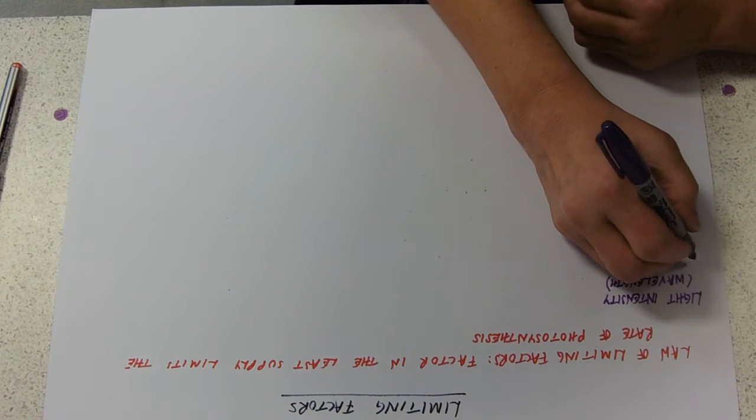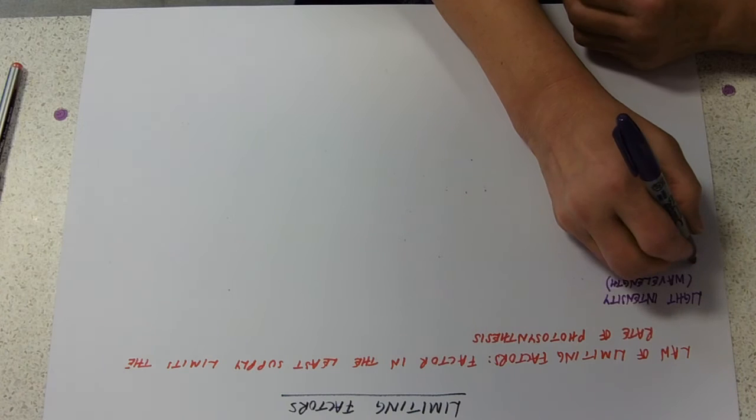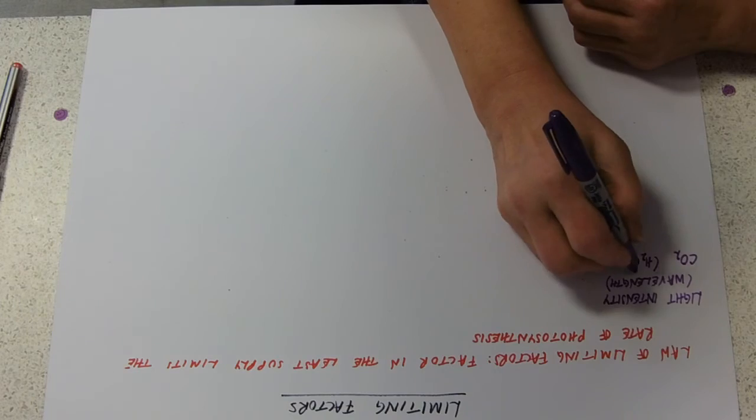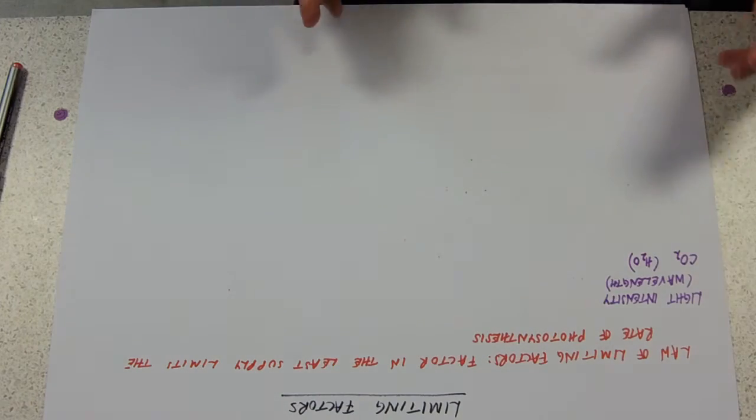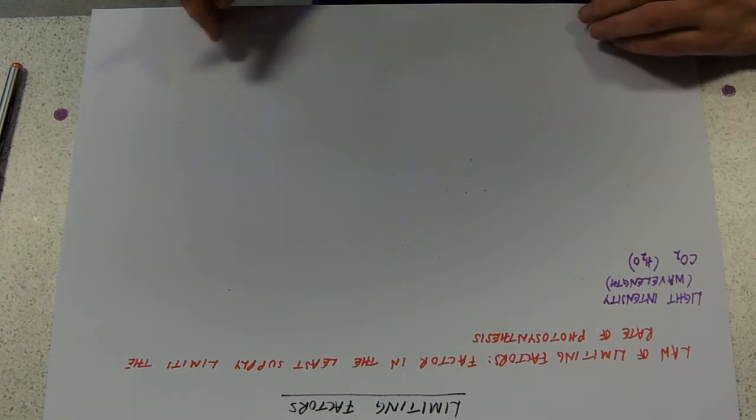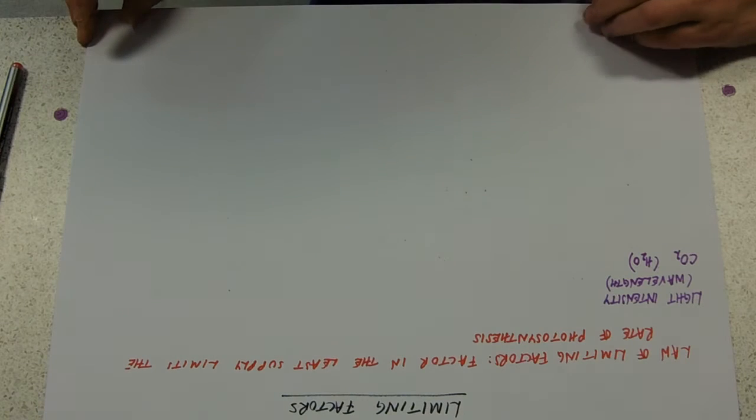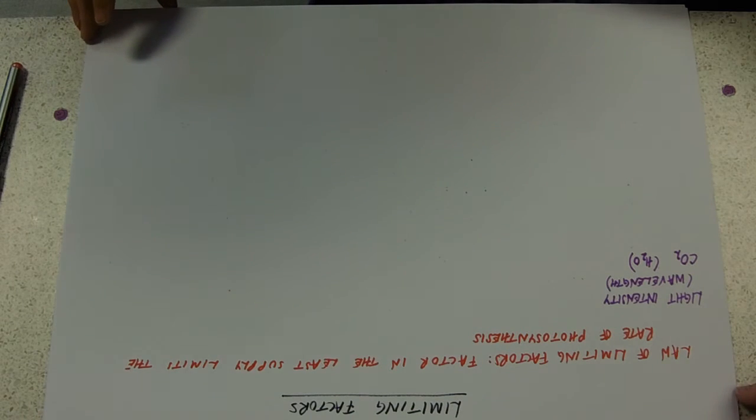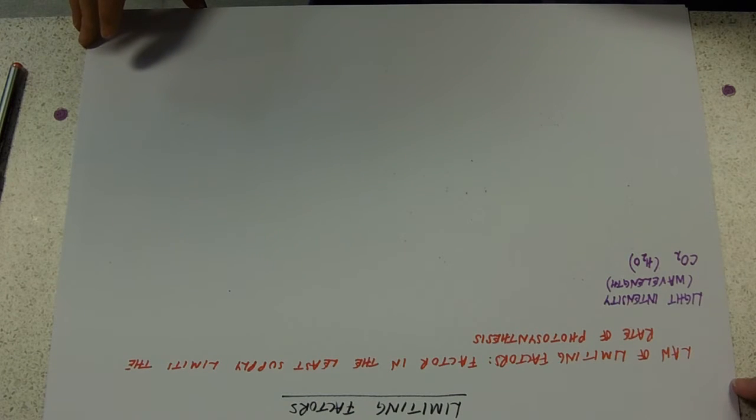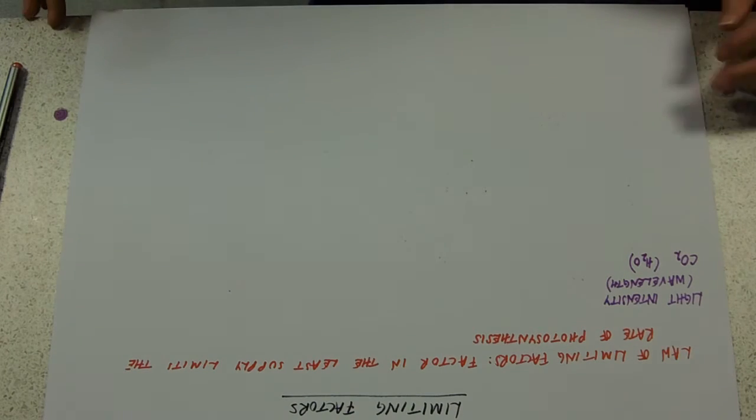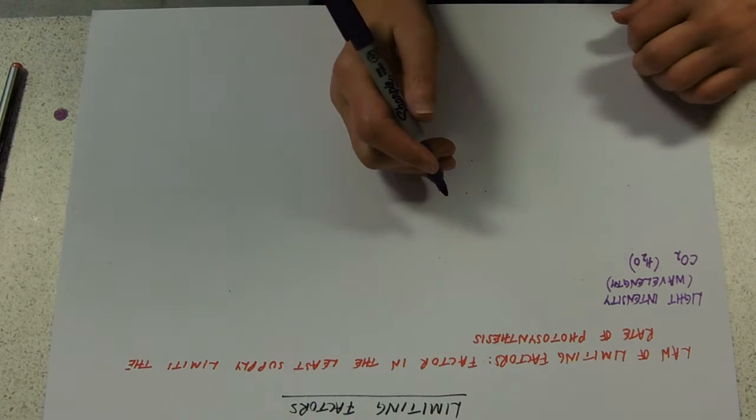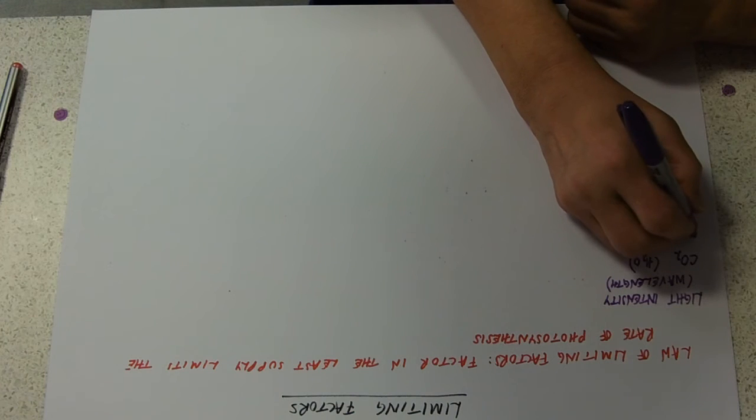We've also got our reactants: carbon dioxide and water. It is hugely difficult to assess the impact of water on the rate of photosynthesis because most water is just used to make cells turgid and stop wilting. If you take the water away, they tend to not function very well. And of course, temperature.